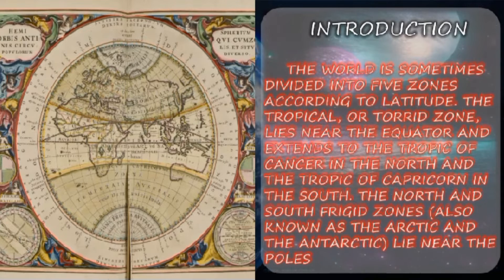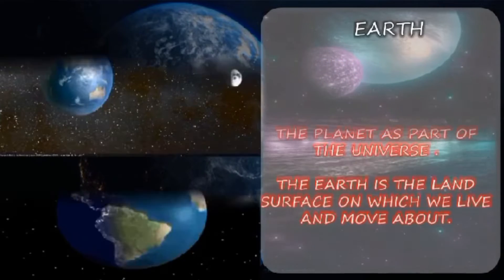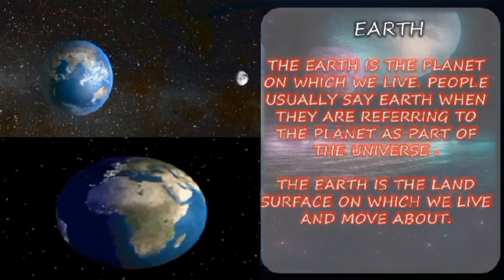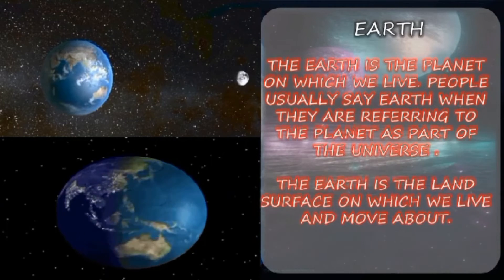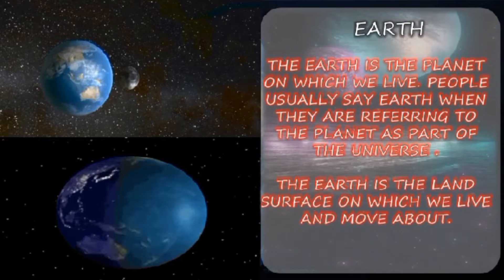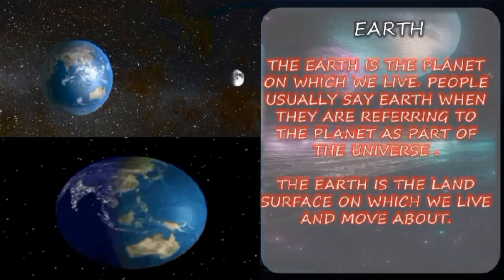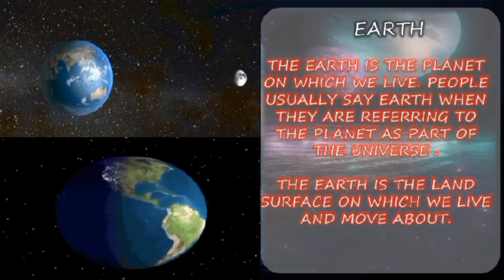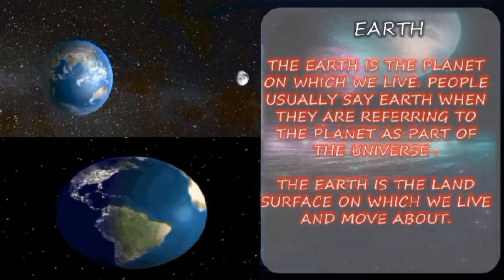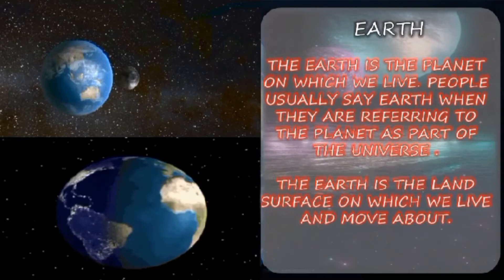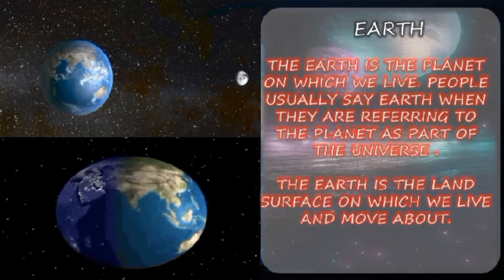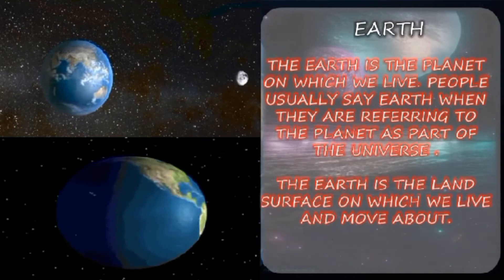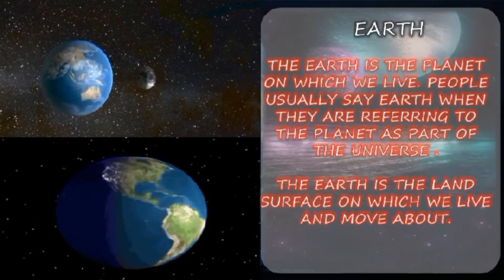The Earth is the planet on which we live. People usually say Earth when referring to the planet as a part of the universe. The Earth is the land surface on which we live and move about. Our Earth is a very beautiful planet, and the distance between the Sun and the Earth makes life possible. It is protected from the ultraviolet rays of the Sun by the upper layer of the atmosphere, such as the ozone layer. The shape of the Earth is spherical, like a ball.